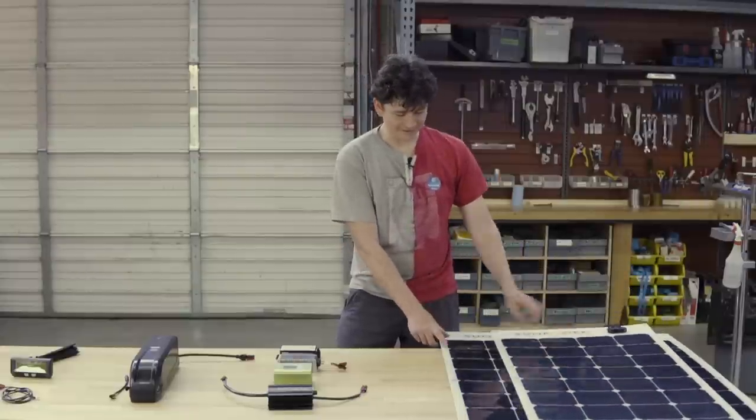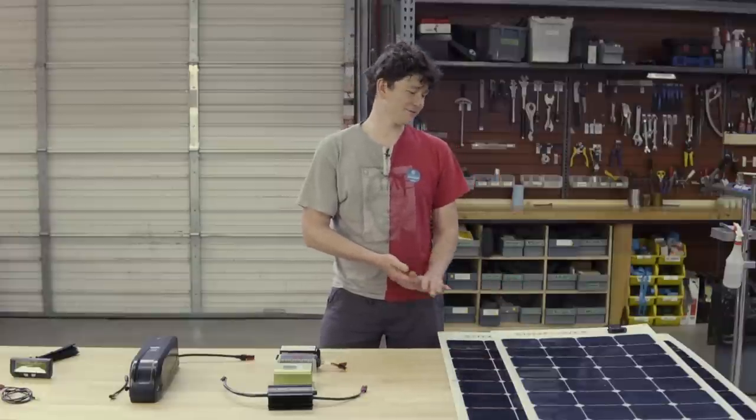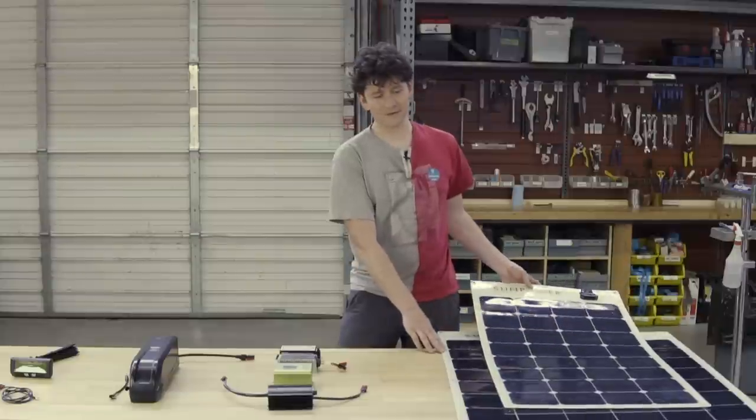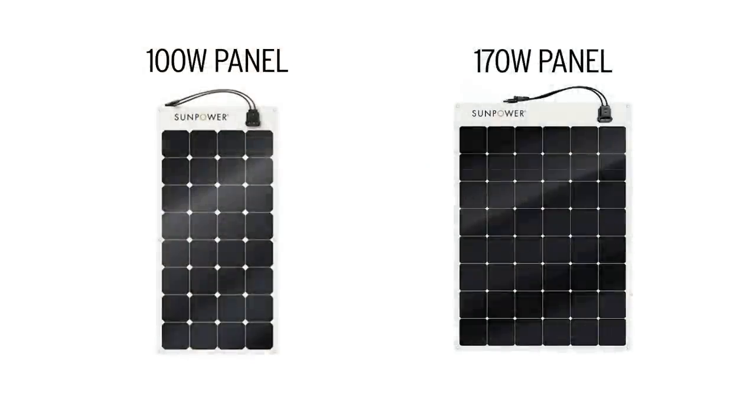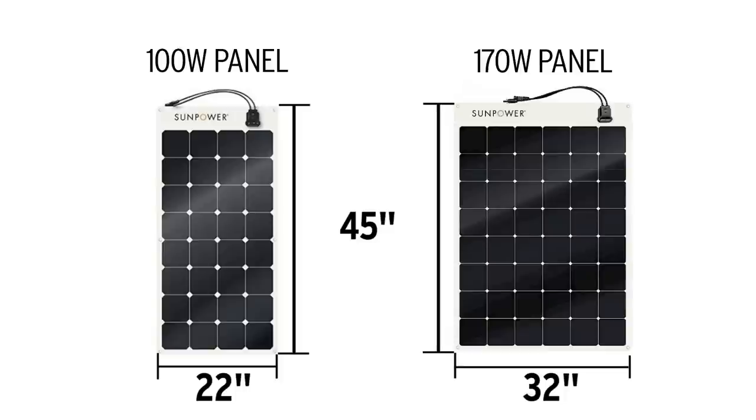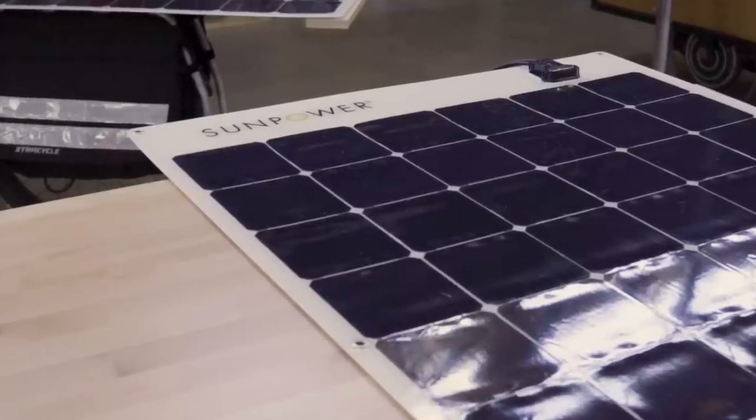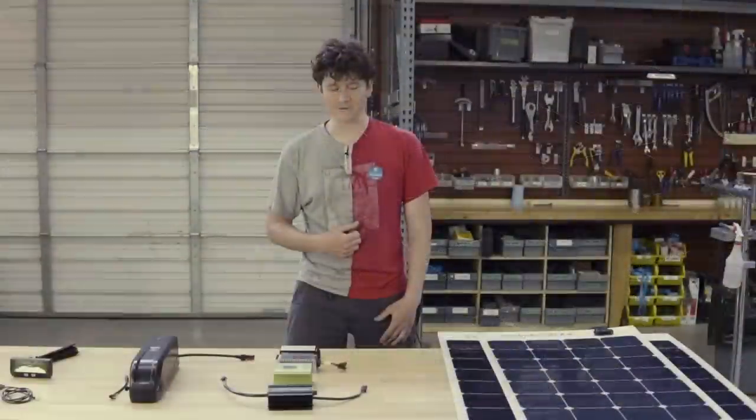The panels here are running 20 to 22 percent efficiency. Panels of yesteryear might have been 10 to 13 percent. So you see here is a 100 watt panel on top and a 170 watt panel below. This is the type of size of panel that's necessary to get a meaningful charge, and if you're touring with a bike where you want to charge all the time you're actually going to need several panels of this size to get an adequate input.